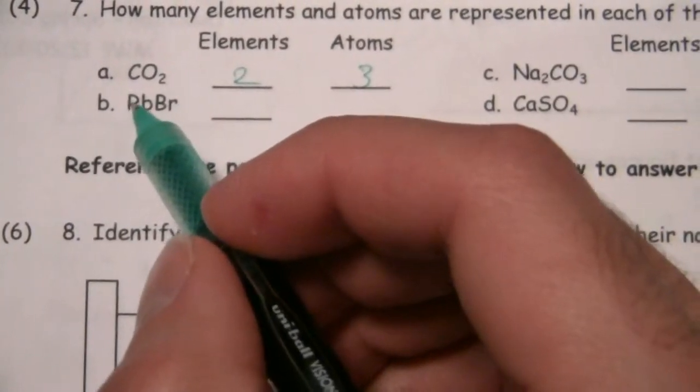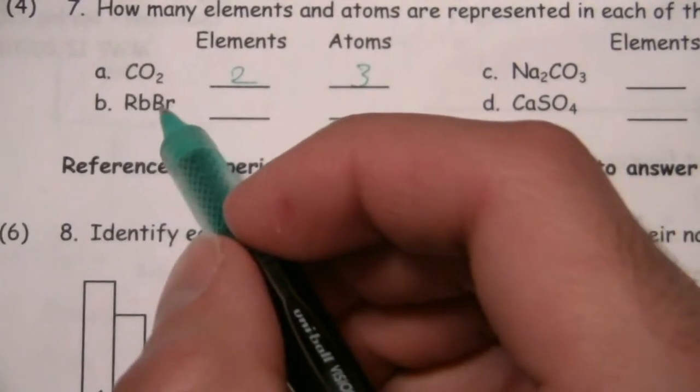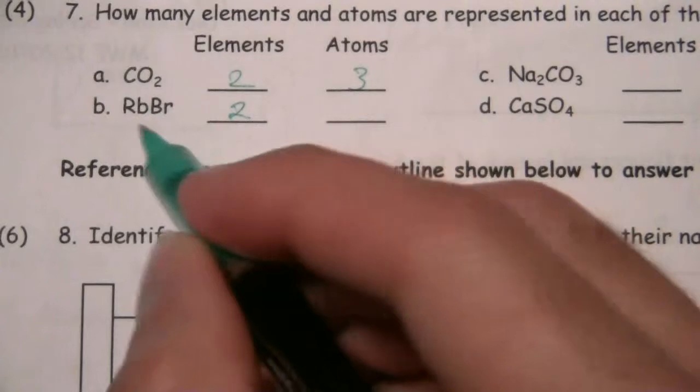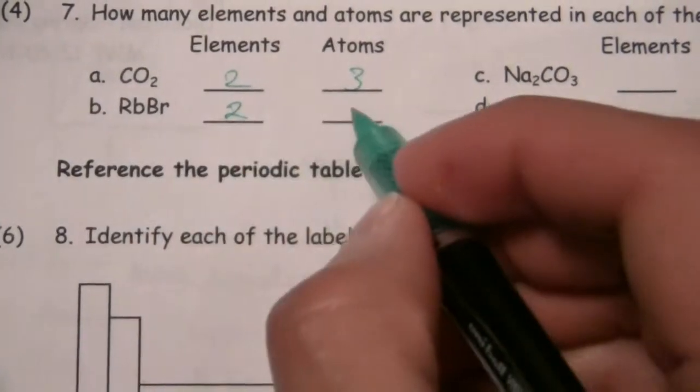RB is rubidium, and Br is bromine, so there's two elements and two atoms, one of each.